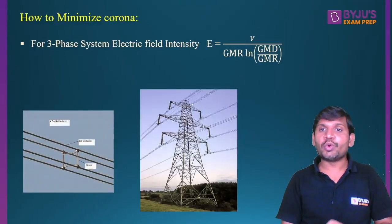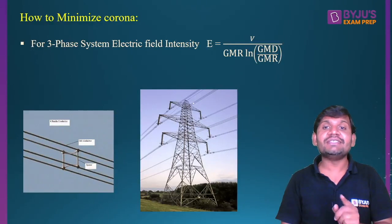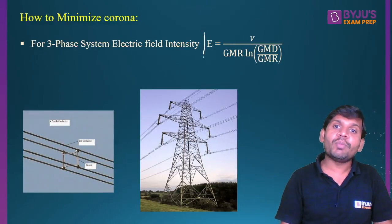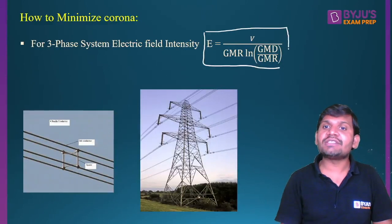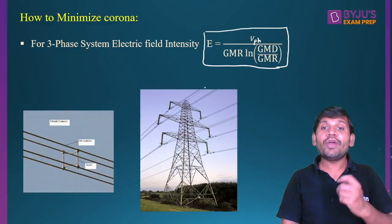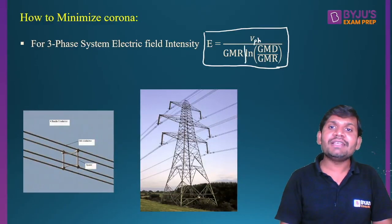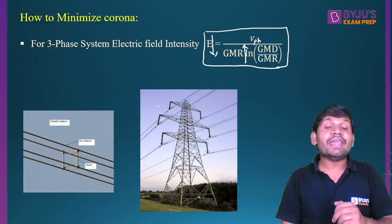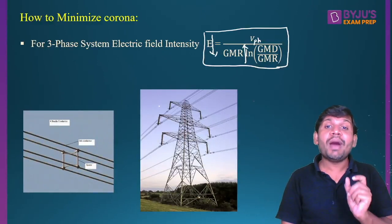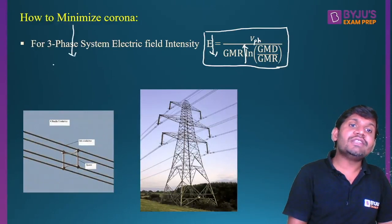How to minimize this corona effect? The main reason for corona is the large electric field intensity on the surface of the conductor. This is the formula for electric field intensity on the surface of the conductor for a three-phase system, where V is the phase voltage. To reduce the corona effect, we reduce the electric field intensity. The electric field intensity is reduced if the GMR (geometric mean radius) is increased. The GMR is increased by using bundle conductors — meaning corona is minimized using bundle conductors.